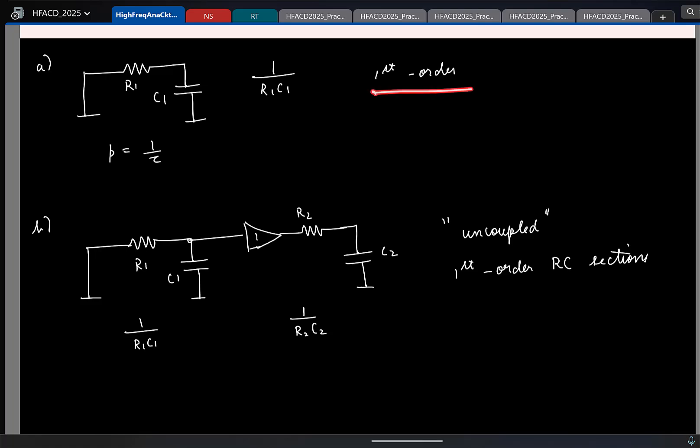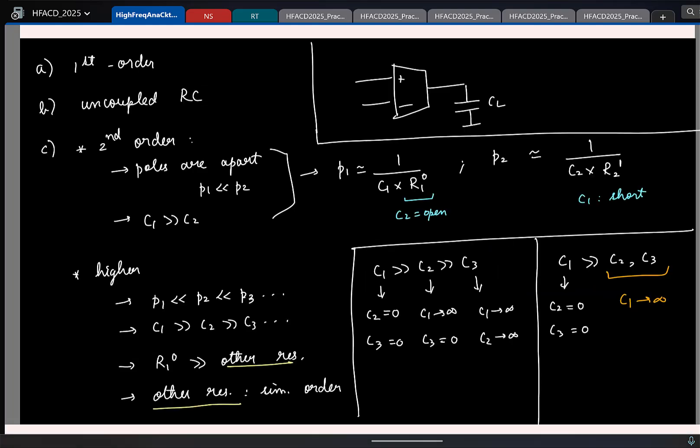If it is a first order circuit, you can obviously do it. If you have uncoupled first order sections, you can still do it. And if you have higher order systems, if the poles are far apart and if one capacitor is greater than the other, then you can write it this way. And if C1 is much greater than C2, the low frequency pole will be due to C1. And to find the effective resistance due to C1, you actually open the other capacitor because other capacitor is still open.